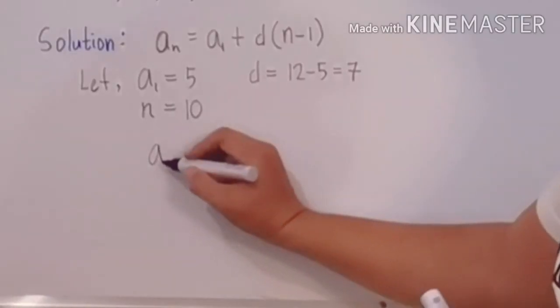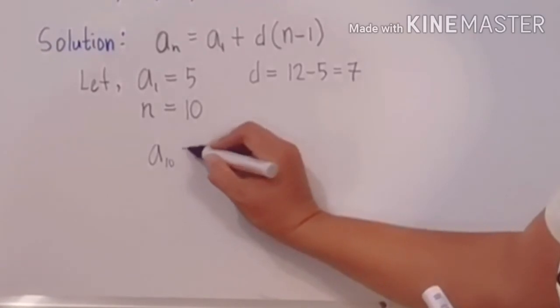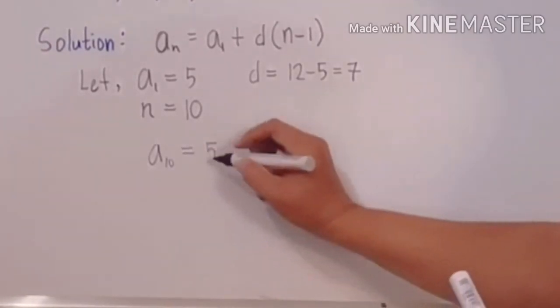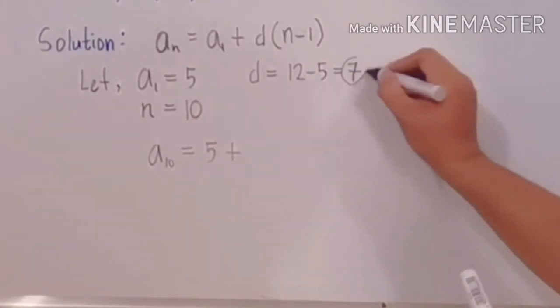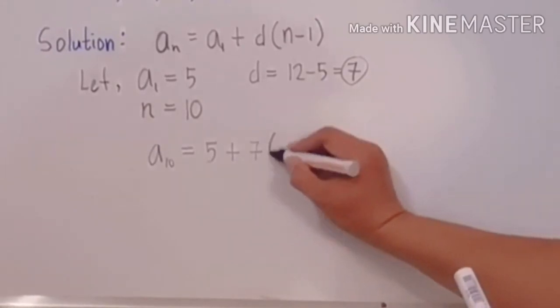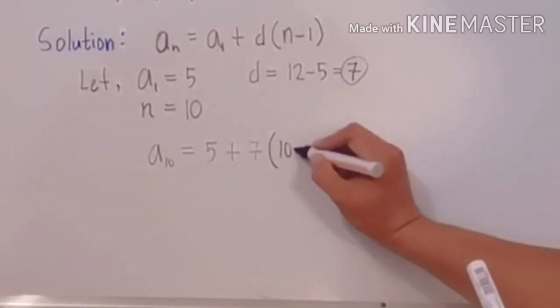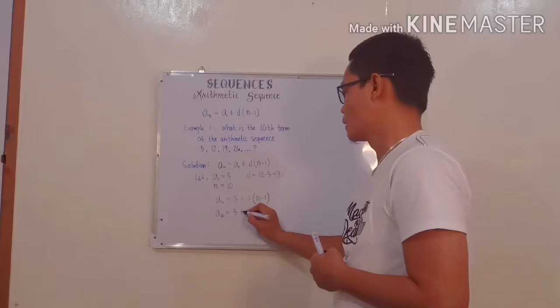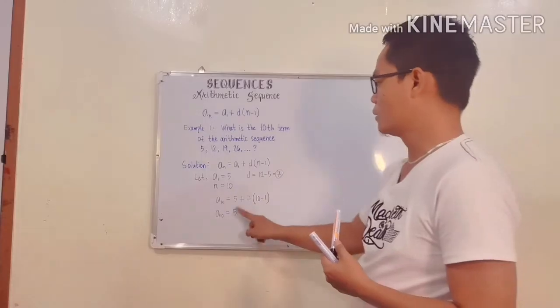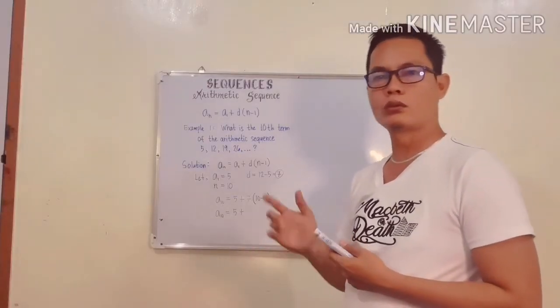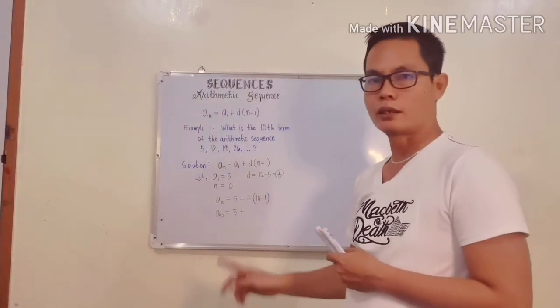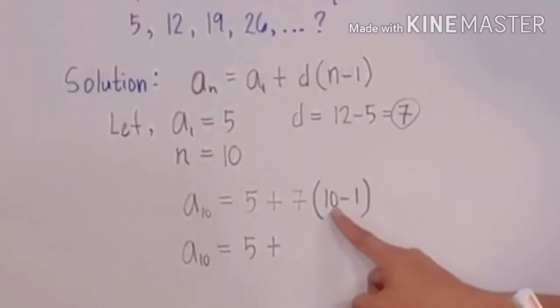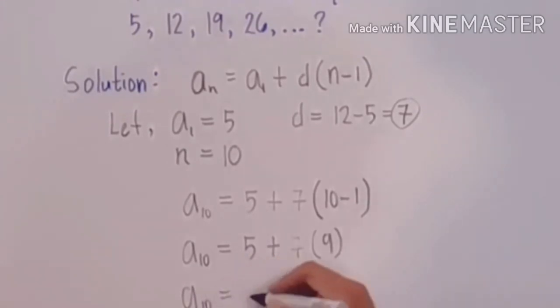These are the values that we are going to use. We are going to solve for the 10th term. We have the value of a₁ is 5 plus the common difference of 7, which is this one - we have 7 - then we have the value of n here is 10 minus 1. a₁₀ equals to 5. Basically, we don't need to add 5 and 7 according to the rule of PEMDAS. We need to simplify first the parenthesis or maybe exponent. In this case we have the parenthesis here.